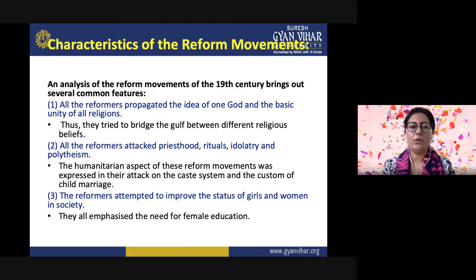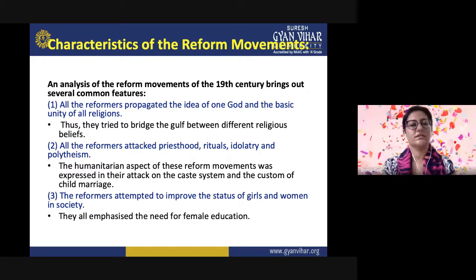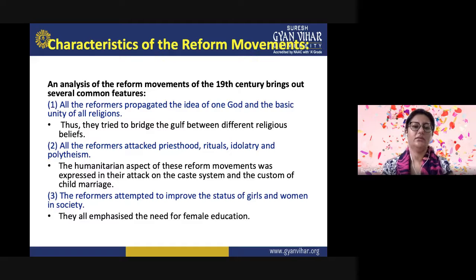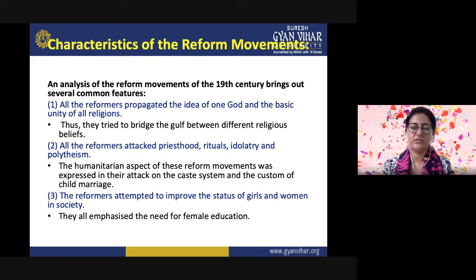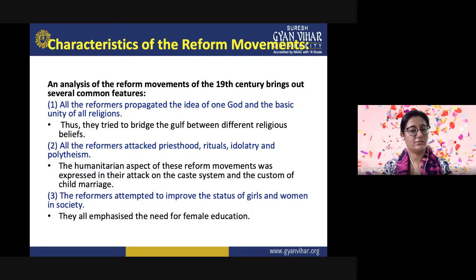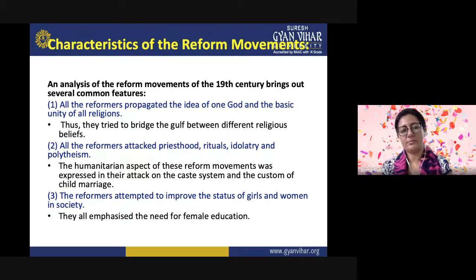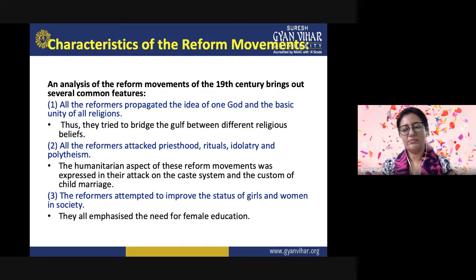These are the important characteristics of the reform movements. The 19th century reform movements have certain common features: all the reformers propagated the idea of one God and the basic unity of all religions, trying to bridge the gulf between different religious beliefs. All the reformers attacked priesthood, rituals, the practice of idolatry, and polytheism. The humanitarian aspect of these reform movements was expressed in their attack on the caste system and the custom of child marriage.